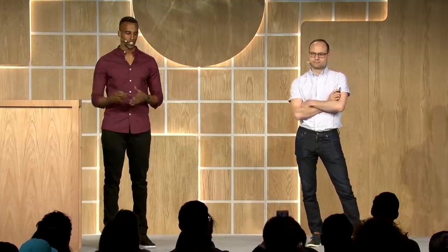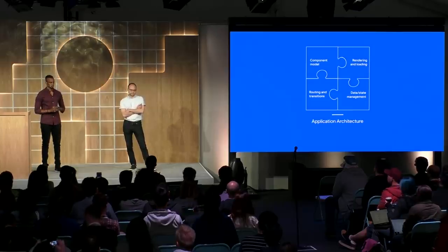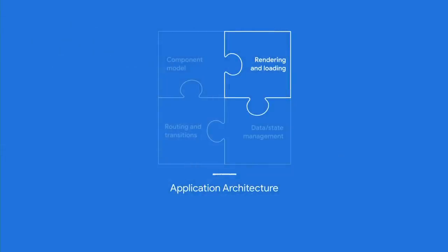When we use the term application architecture, we tend to mean a lot of different things involved with building a website. This can include building out your component model, managing data and state, handling routes and transitions, and even rendering and loading your assets. For this talk specifically, we'll be focusing on different approaches behind rendering and loading, how they all work, as well as how they can impact your site's performance.